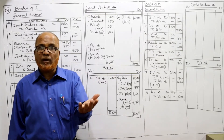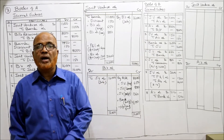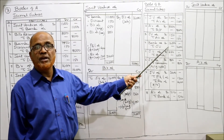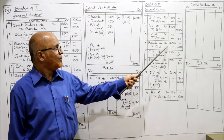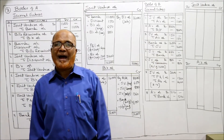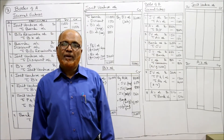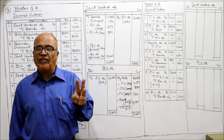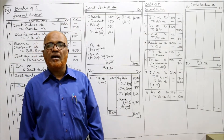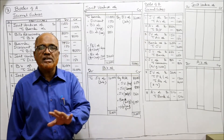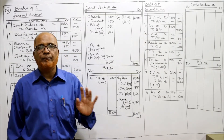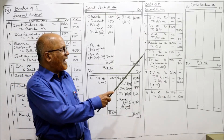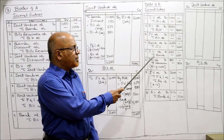B sold all the goods for rupees 16,000. The entire goods were sold, money received, so Bank Account Dr. to Joint Venture Account - 16,000 - being the goods sold. Then for expenses: Joint Venture Account Dr. to Bank - fire insurance 350, rent 300, total 650 - being the expenses paid by B.